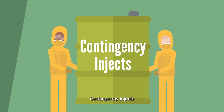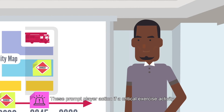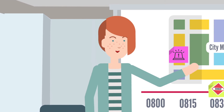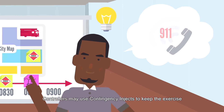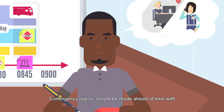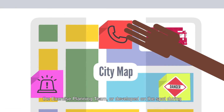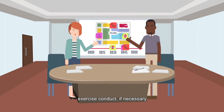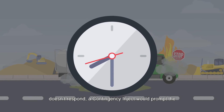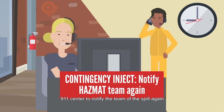Contingency injects prompt player action if a critical exercise activity does not occur. Controllers may use contingency injects to keep the exercise on track and help player actions meet the objectives. Contingency injects should be made ahead of time with the exercise planning team, or developed on the spot during exercise conduct if necessary. For example, in the hazmat spill scenario, if the hazmat team doesn't respond, a contingency inject would prompt the 911 center to notify the team.